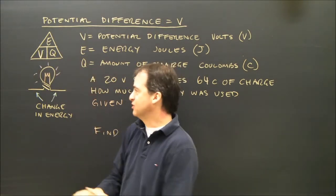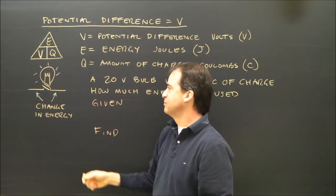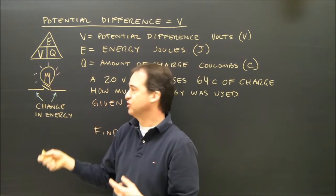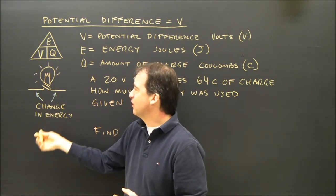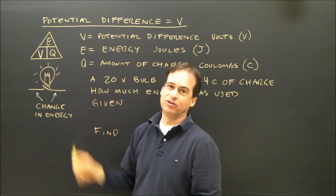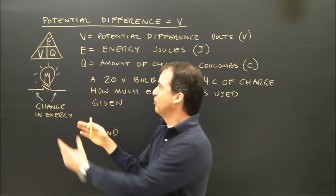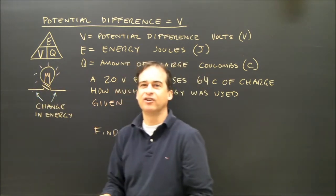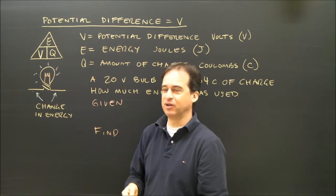The way it works is when electricity goes through something like a bulb, it has a potential drop, meaning energy is used up. There's a change in the amount of energy. The electrons went into the bulb with a lot of energy and they came out with less energy. We want to know what is that change in energy for every group of electrons that went through there.